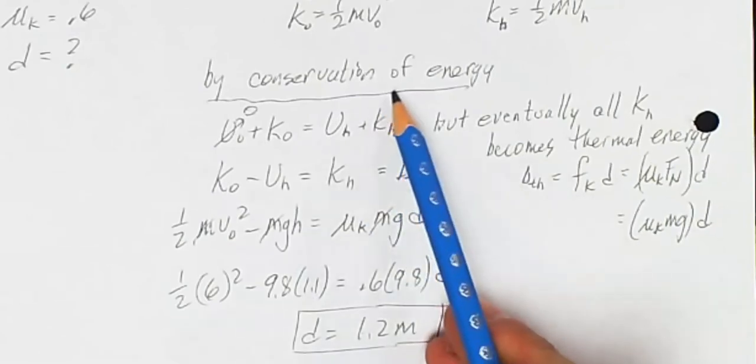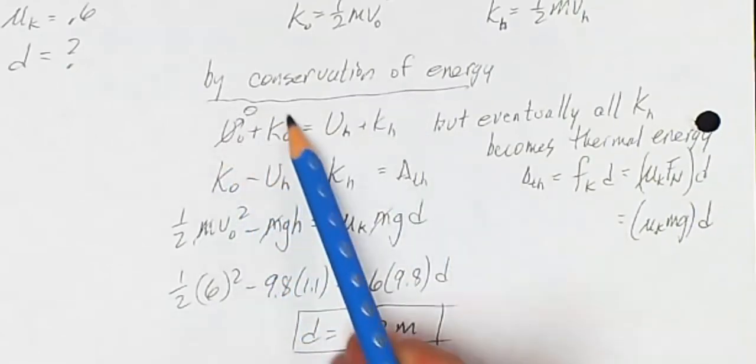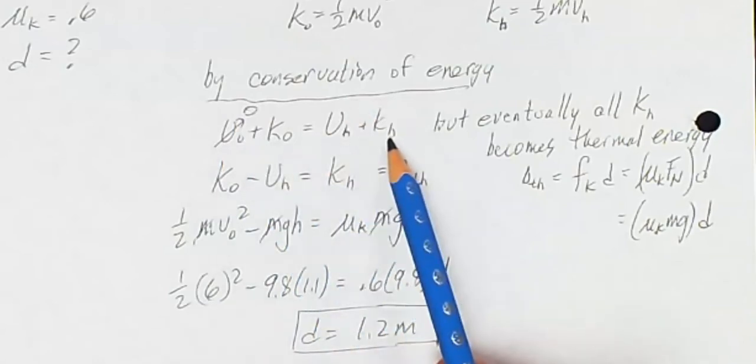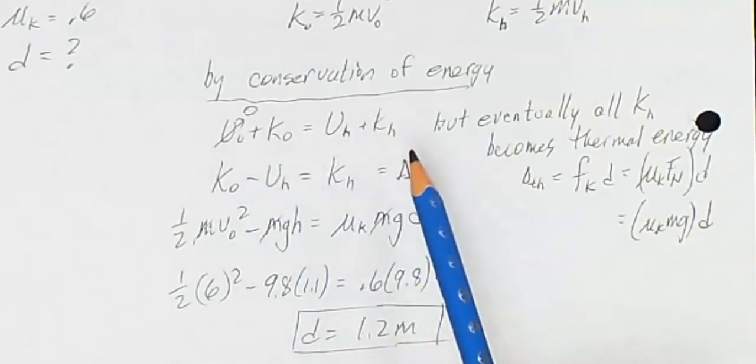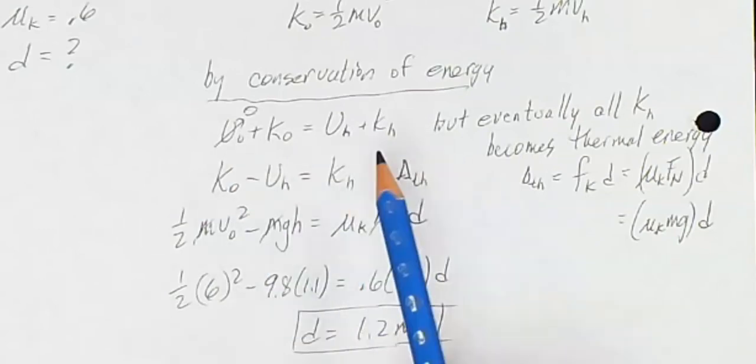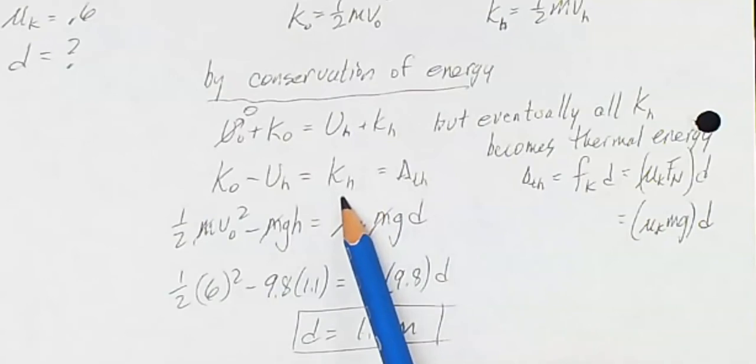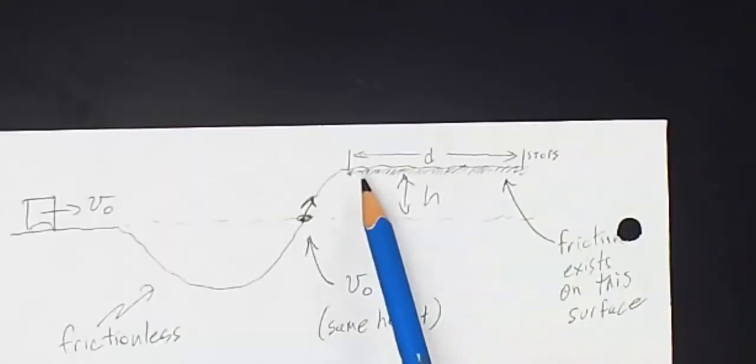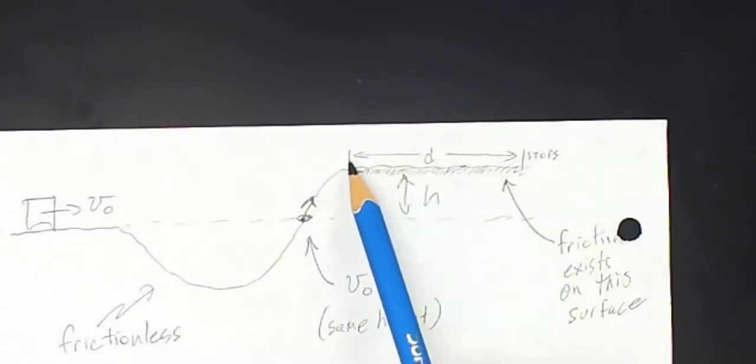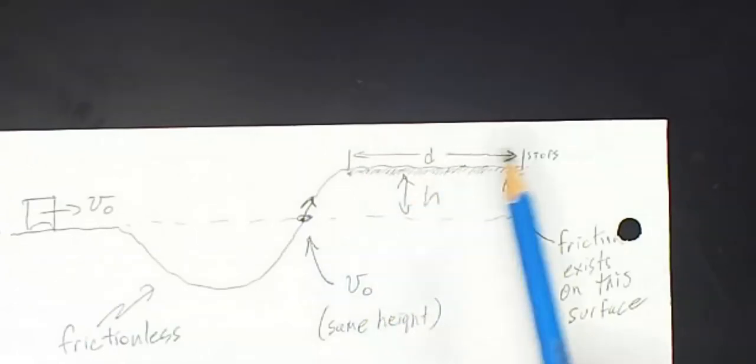By conservation of energy, the total mechanical energy at my starting point is equal to my total mechanical energy at my final point. I'm going to solve this for kH. And then I can recognize that all of the kinetic energy that is here becomes thermal energy over here. So the number that is associated with the k here is the same number that is associated with the delta thermal over here.